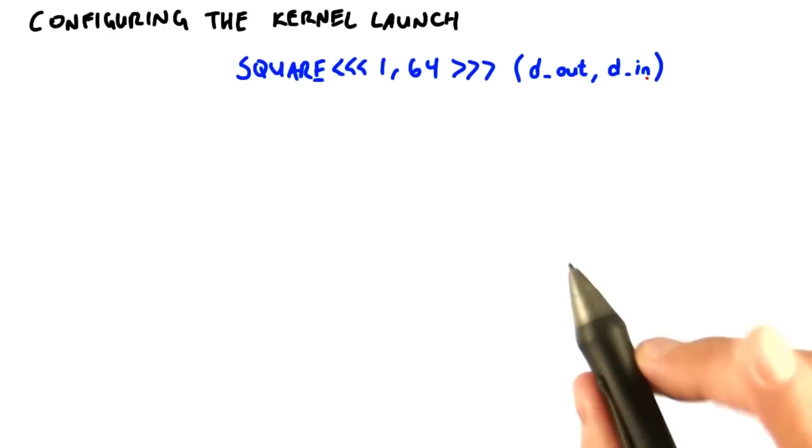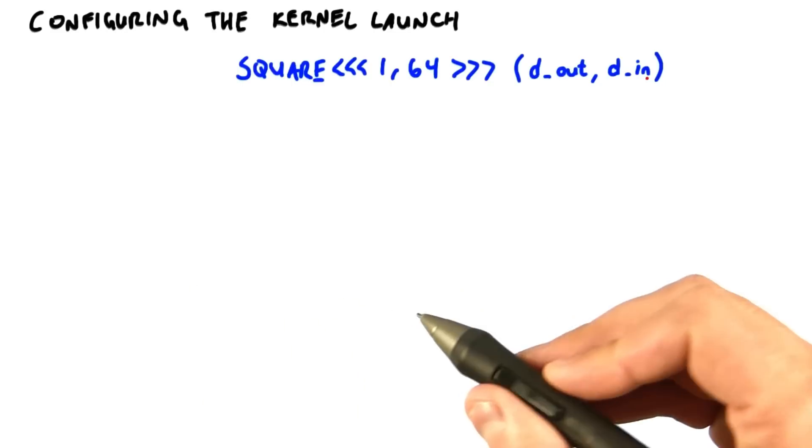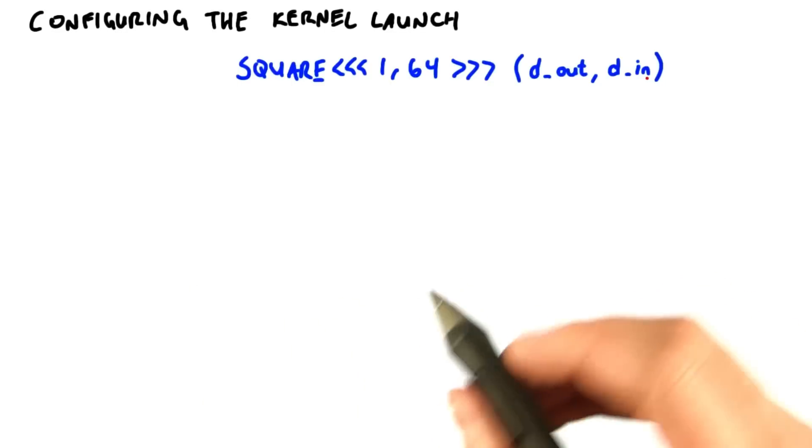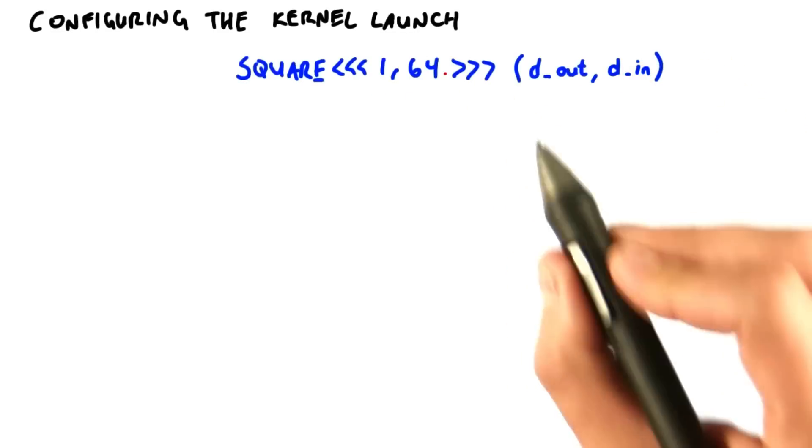There's a lot going on in this call, so I need to explain details that we didn't need in our example that are necessary as we move forward. What I told you is that we were launching one block of 64 threads, and that's absolutely true.